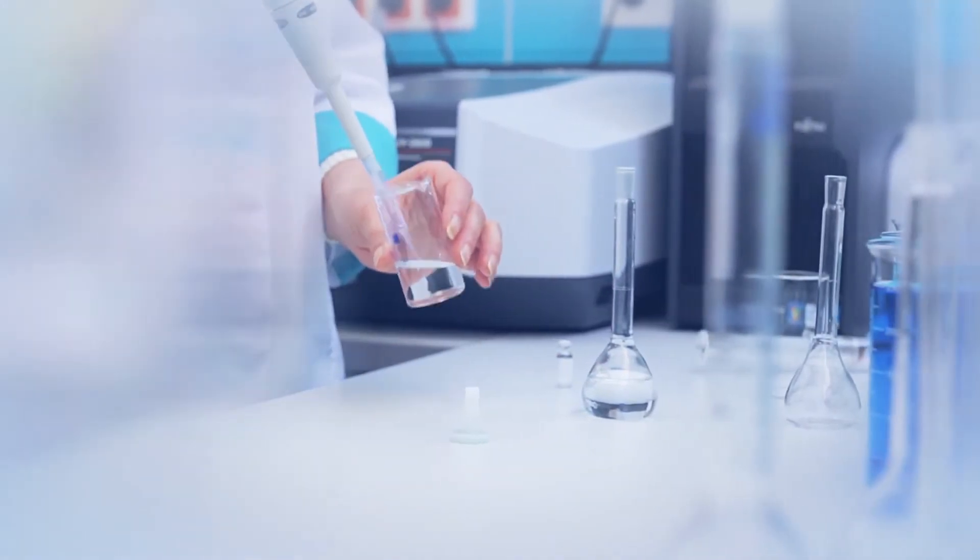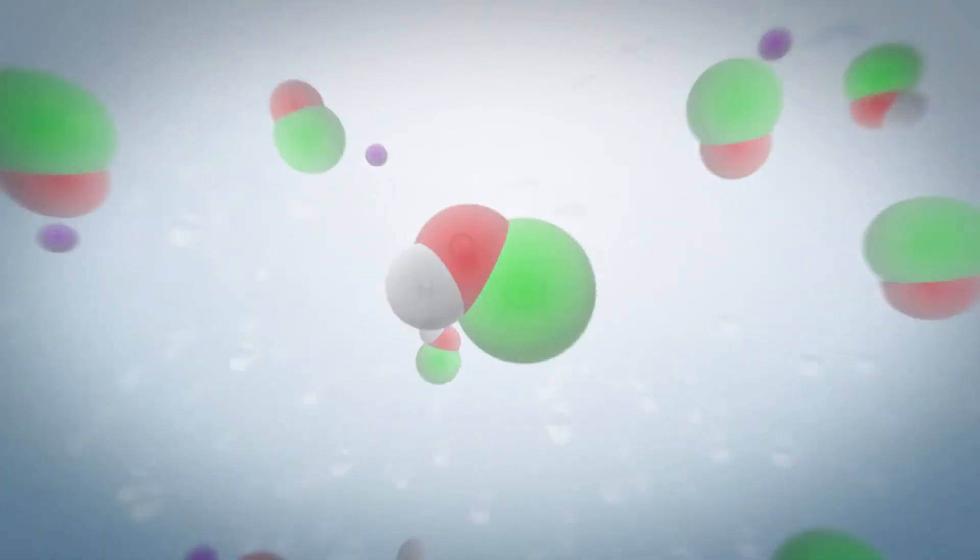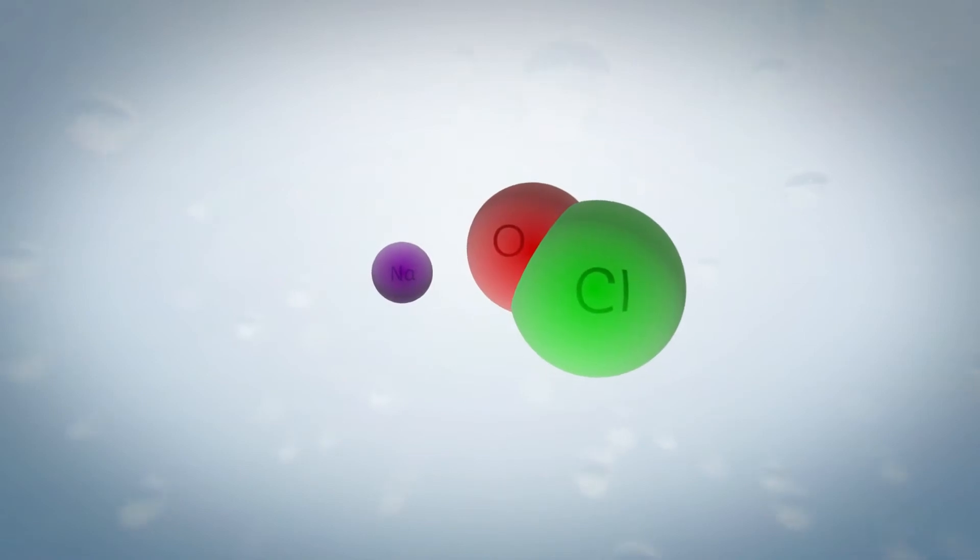How do we do that? An electrochemical process generates a pH-neutral and balanced solution of hypochlorous acid and sodium hypochlorite.